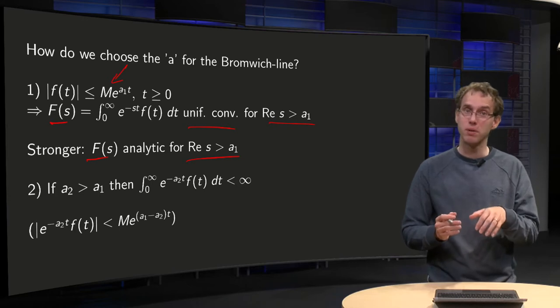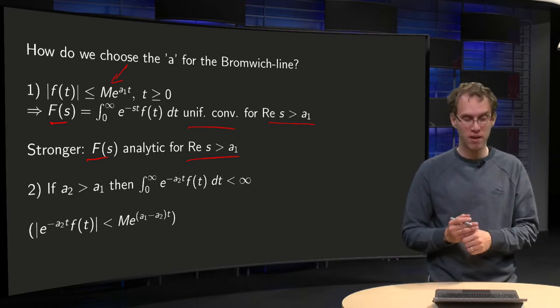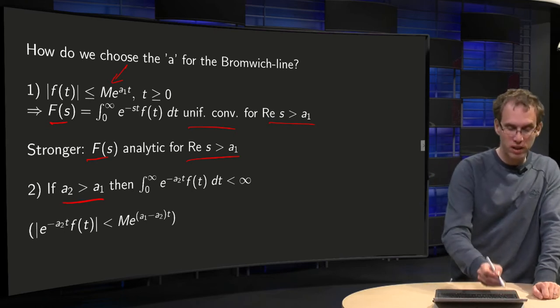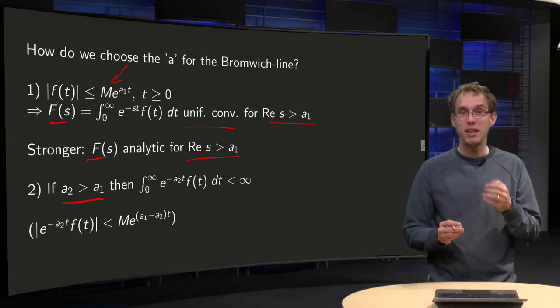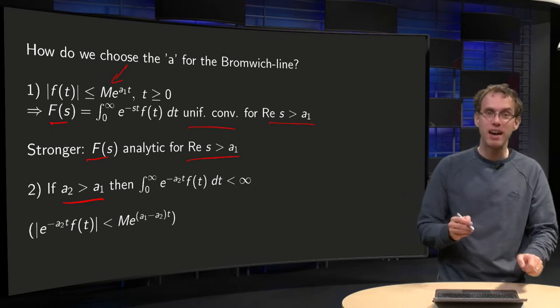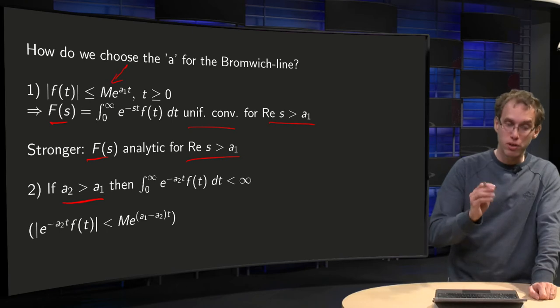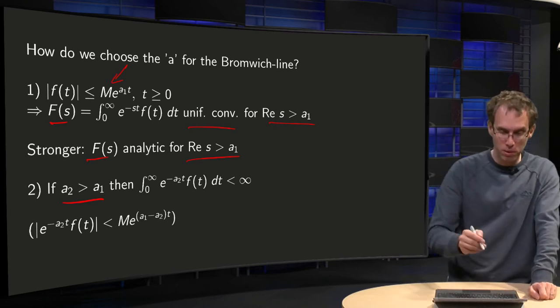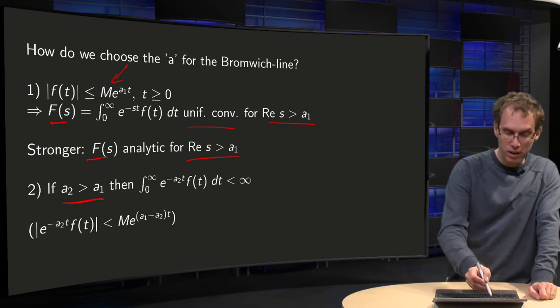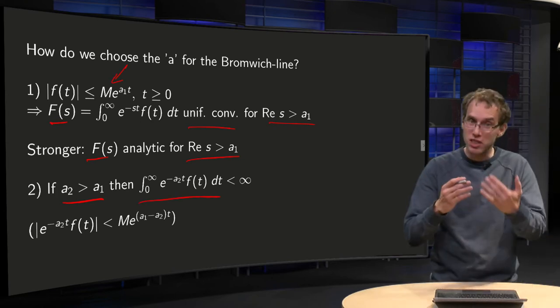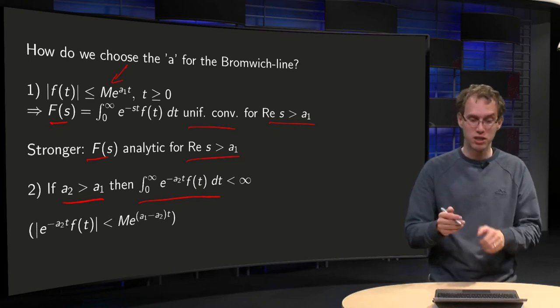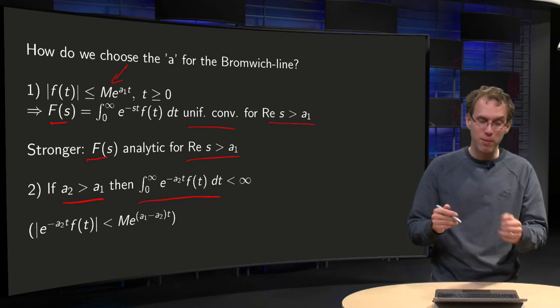Okay, you still don't know a₁ because you do not know your small f. Well now, if you put your a₂, the a₂ from the Bromwich line, if you put it now bigger than a₁, then your integral, your second condition is satisfied. Your integral e to the power minus a₂ times t times f(t), if you integrate that, is smaller than infinity.